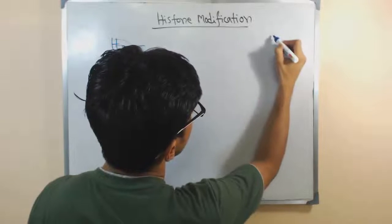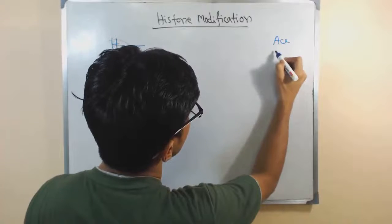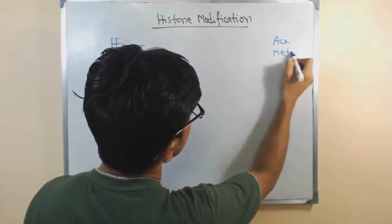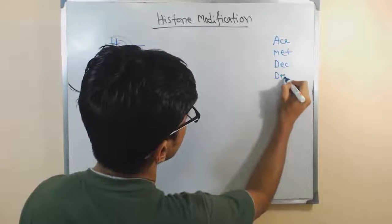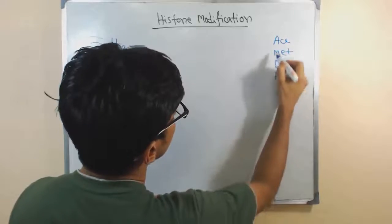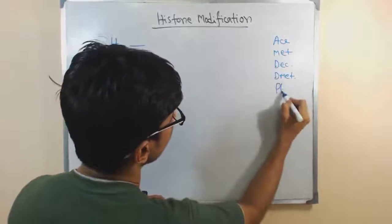We are looking at modifications like acetylation, methylation, deacetylation, and demethylation, which are also involved. These are similar kinds of things, and also phosphorylation.